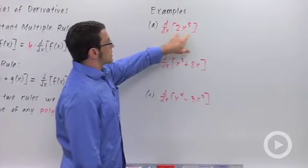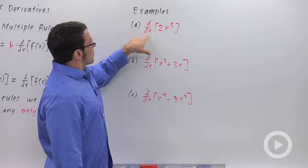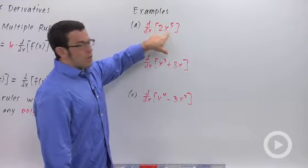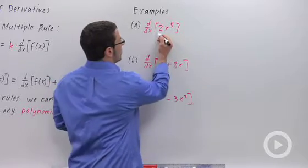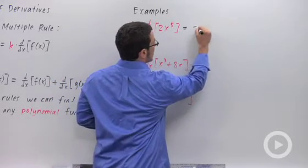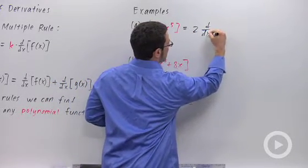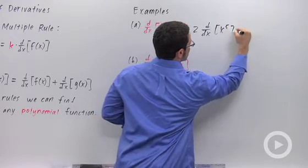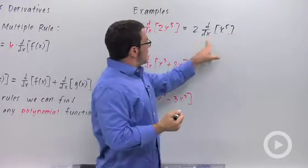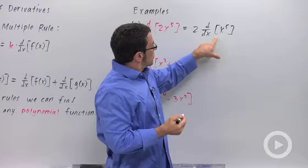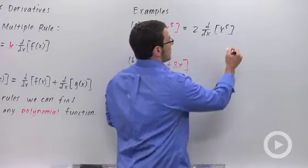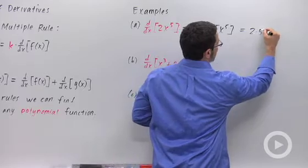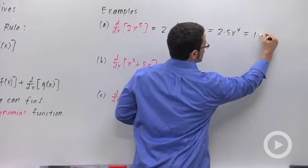Starting with a really simple one. This is actually just a power function: the derivative with respect to x of 2x to the fifth. So first, we can use the constant multiple rule to pull this constant 2 outside. So it's 2 times the derivative of x to the fifth. And we know how to differentiate power functions. The derivative with respect to x of x to the fifth is 5x to the fourth. So this is 2 times 5x to the fourth, and our answer is 10x to the fourth.